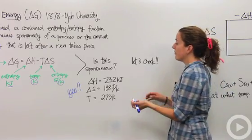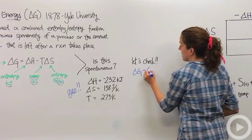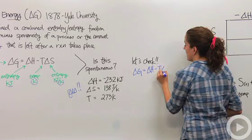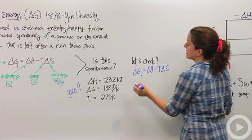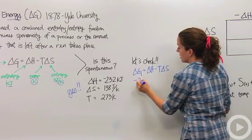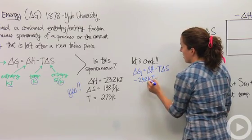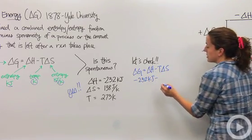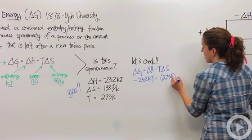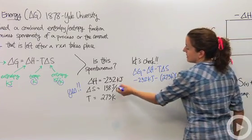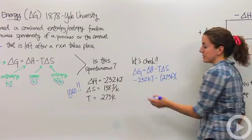Let's prove it to ourselves — let's look at our formula. Delta G equals delta H minus T times delta S. Plugging in: delta H is negative 232 kilojoules, minus our temperature of 273 Kelvin times our delta S. This is in joules, so I need to make sure the units match — I'm going to change this to kilojoules.